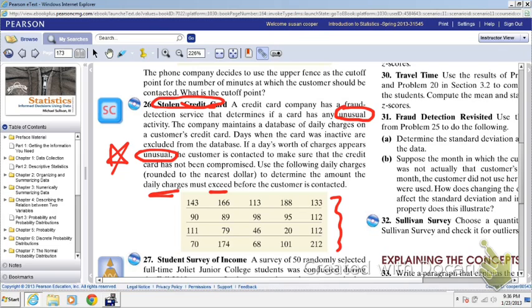Use the following daily charges to determine the amount that the daily charges must exceed before being considered unusual. So you're looking at these charges. Okay, and you're looking at the number, probably if you're like me, you're looking at the number 212, and the question is, is it unusual? Well, to answer that, there's lots of things we could do. We could make what's called a modified box plot to display outliers. We're going to do that on the TI-83 in a moment.